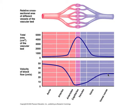At the capillaries, the velocity of blood flow is 0.03 centimeters per second. And the cross-sectional area is huge, 4,500 centimeters squared.